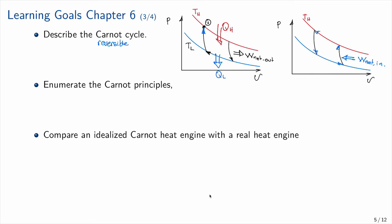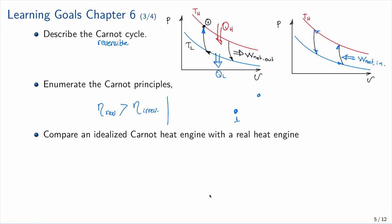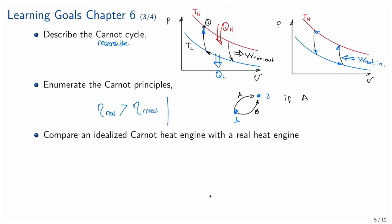The Carnot principles: first, the efficiency of a reversible process is greater than the efficiency of an irreversible process. Second, if we go between two states via process A or process B, and both A and B are reversible, then the efficiency of A equals the efficiency of B.